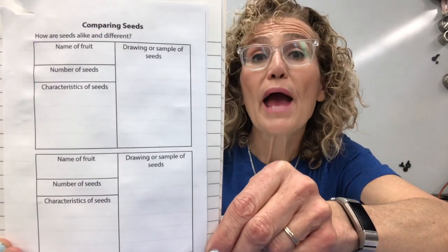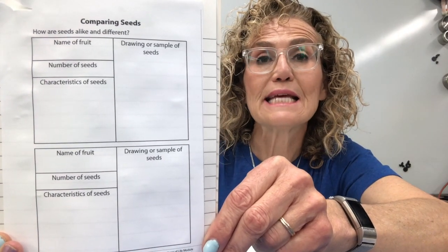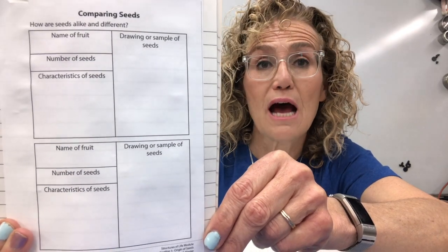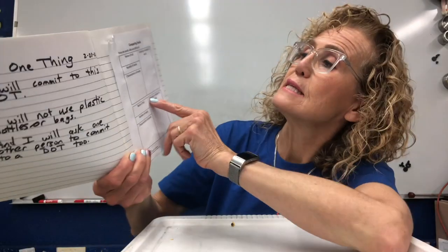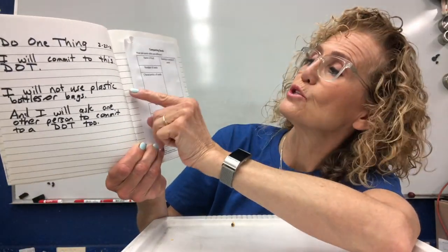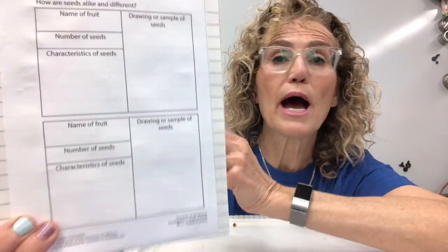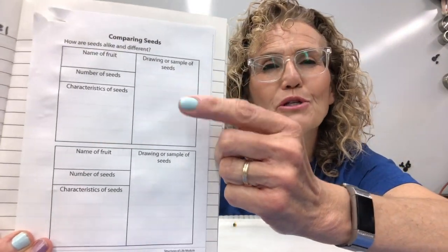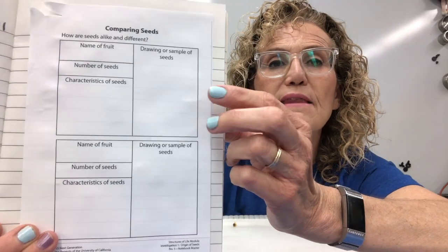Can you guys please glue this page into your science notebook? It's called Comparing Seeds. If you have two fruits at home, you can look at the seeds inside your fruits, or you can look at the seeds that I am going to show you. You're going to choose two seeds. You're going to put the name of the fruit, the number of seeds, the characteristics of the seeds — the properties, how would you describe them? — and then a drawing or a sample. Just put a drawing of the seed there.